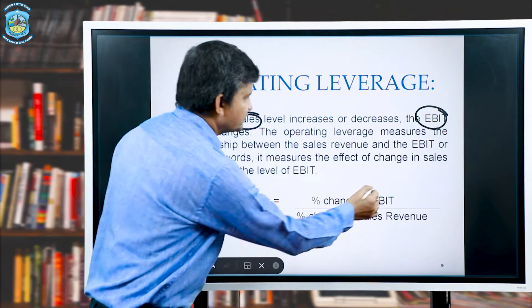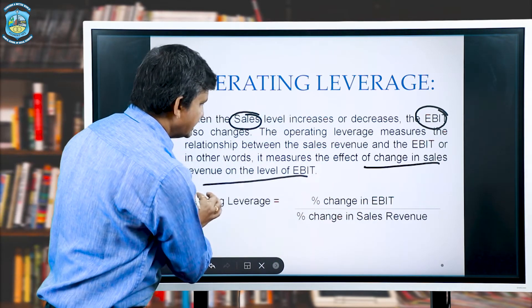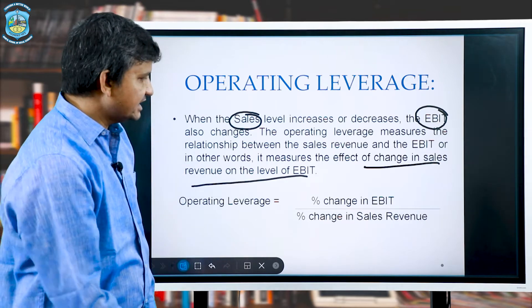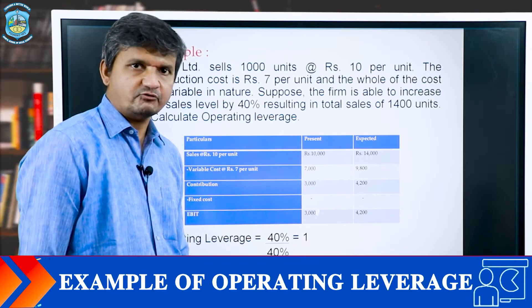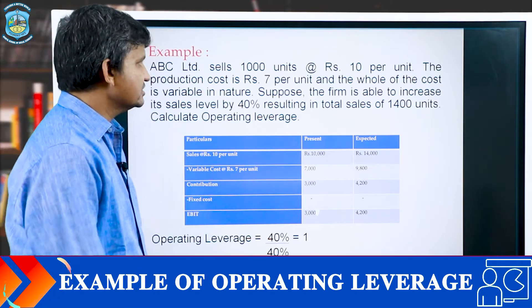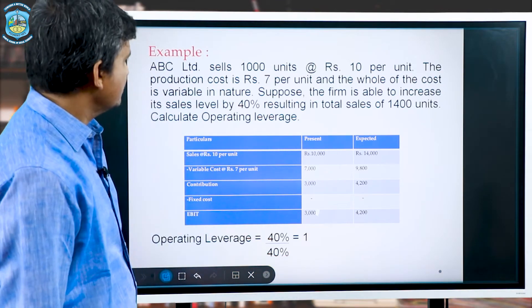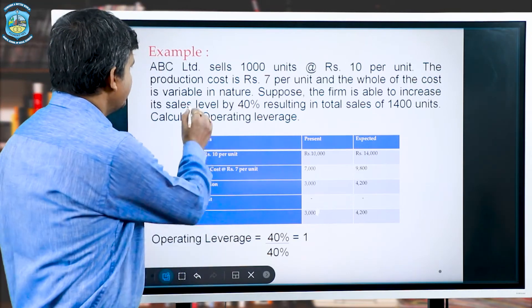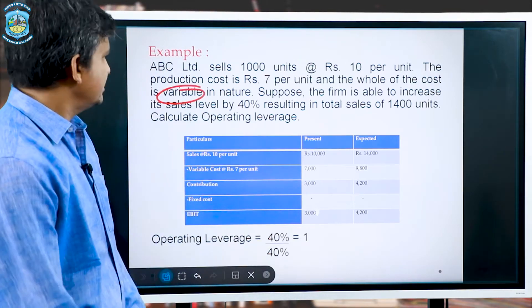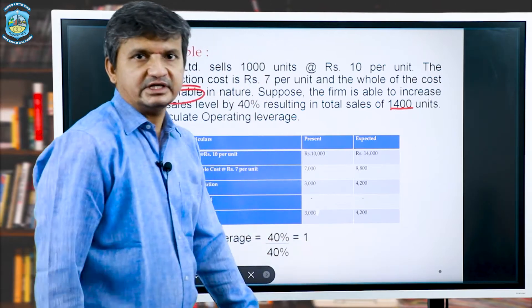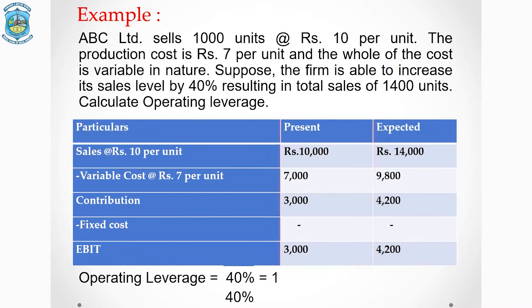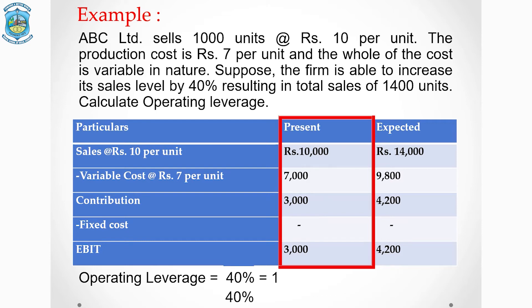Operating leverage measures the effect of change in sales on the level of EBIT. The formula is: operating leverage = percentage change in EBIT divided by percentage change in sales revenue. Example: ABC Limited sells 1,000 units at rupees 10 per unit, variable cost is rupees 7 per unit, and the whole cost is variable in nature. Sales come to rupees 10,000.